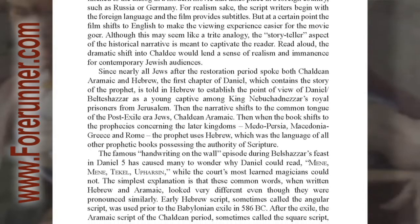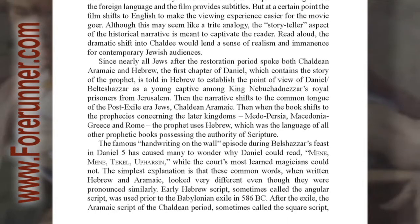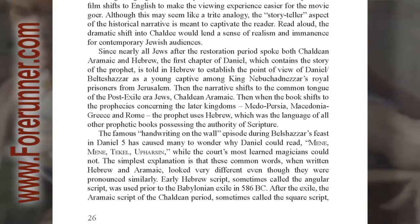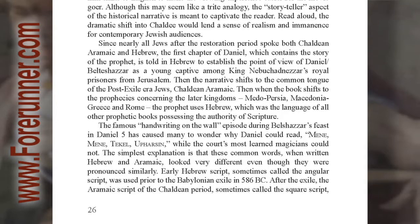Since nearly all Jews after the Restoration period spoke both Chaldean Aramaic and Hebrew, the first chapter of Daniel, which contains the story of the prophet, is told in Hebrew to establish the point of view of Daniel Belteshazzar as a young captive among King Nebuchadnezzar's royal prisoners from Jerusalem. Then the narrative shifts to the common tongue of the post-exile era Jews, Chaldean Aramaic. Then, when the book shifts to the prophecies concerning the later kingdoms — Medo-Persia, Macedonia, Greece, and Rome — the prophet uses Hebrew, which was the language of all other prophetic books possessing the authority of scripture.